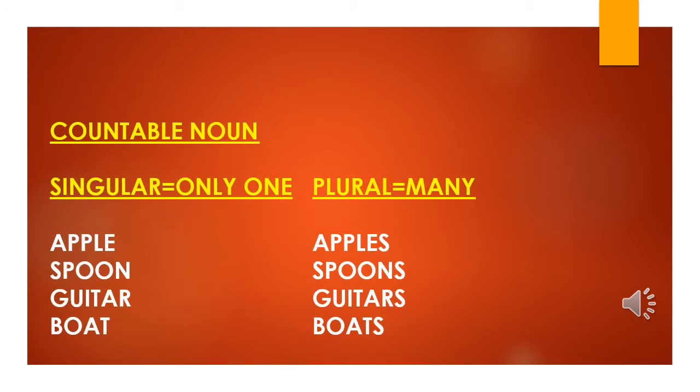Countable nouns are divided into singular and plural. Singular means the object is only one. Plural means the objects are more than one. Let's see the apple. We have one apple here, one spoon, one guitar, one boat for singular nouns.